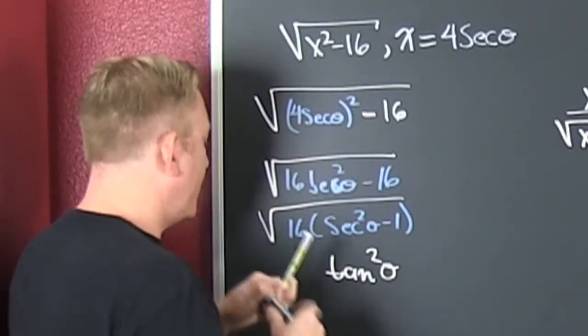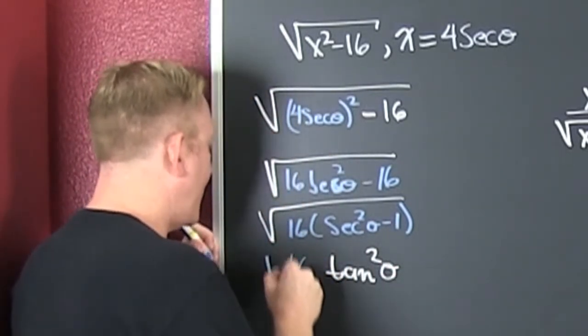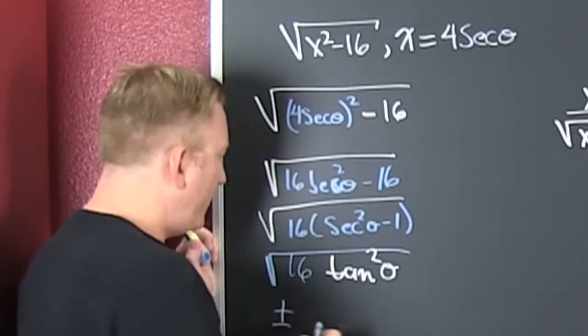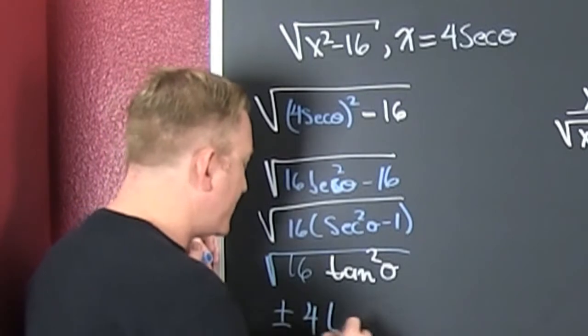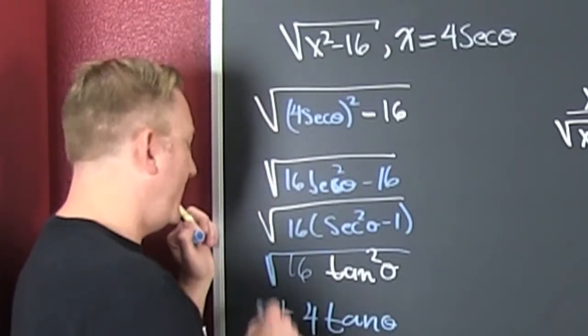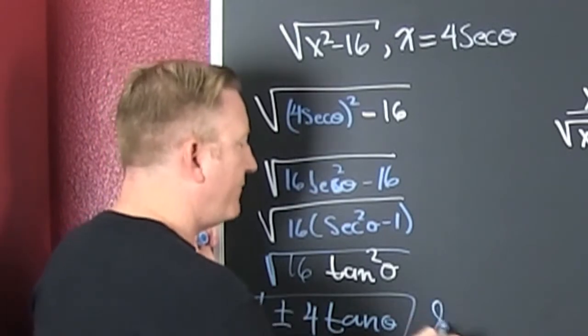And then I'm still going to have that 16 and that root. So then the root of that, that's going to be plus and minus the square root of 16 is 4. The square root of the tangent is the tangent of theta. Oh, boy. Boxing flower.